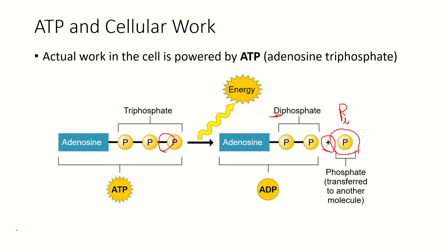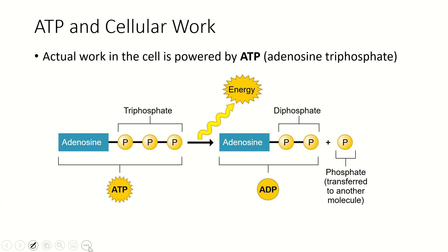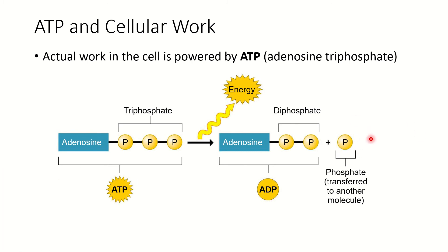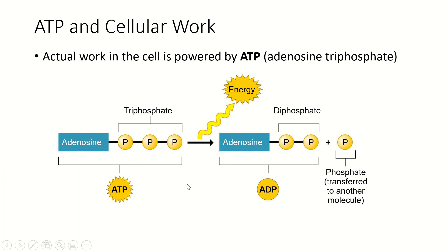These two parts — the ADP and the phosphate — are going to go back to the mitochondria to get put back together to be turned into ATP. That's what the mitochondria does, and that's why the mitochondria are called the powerhouses of the cell — they make the power.